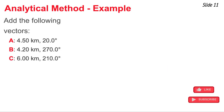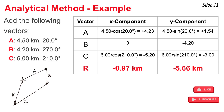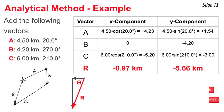Now I'll demonstrate this five-step method for three non-perpendicular vectors. Step one is the sketch — it tells me the resultant is expected to lie in the third quadrant. Step two: I make a table and calculate the components of each individual vector using sine and cosine. Step three: I add up all the components to determine the resultant's components. The rx and ry values are both negative, which tells me I'll have a 0.97 km vector heading west added to a 5.66 km vector heading south. I sketch that and draw the resultant.